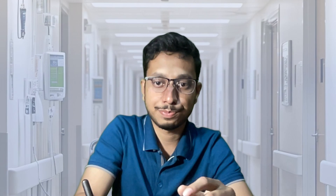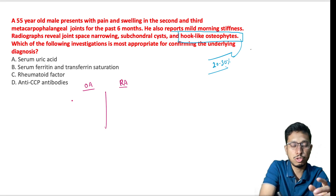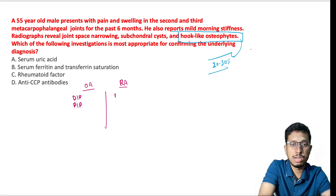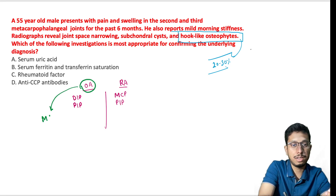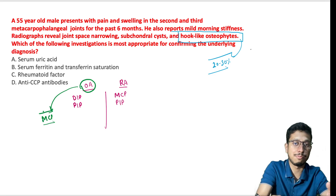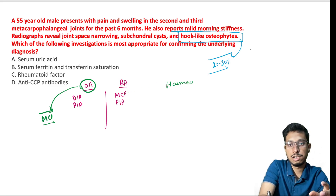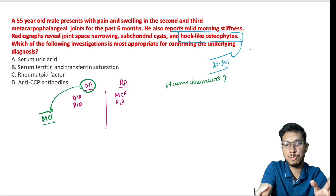Why is MCP joint involvement important? In primary osteoarthritis, the hand joints most commonly involved are the distal interphalangeal and proximal interphalangeal joints. In rheumatoid arthritis, the metacarpophalangeal and proximal interphalangeal joints are affected. If osteoarthritis presents with MCP involvement — a non-inflammatory arthritis, especially bilateral — hemochromatosis should be suspected.